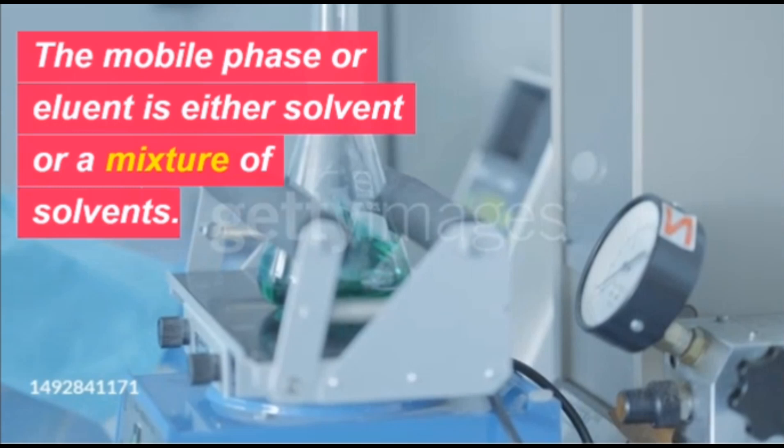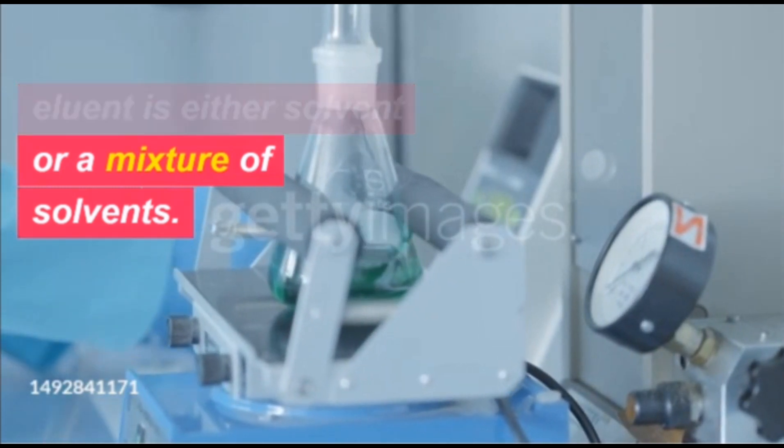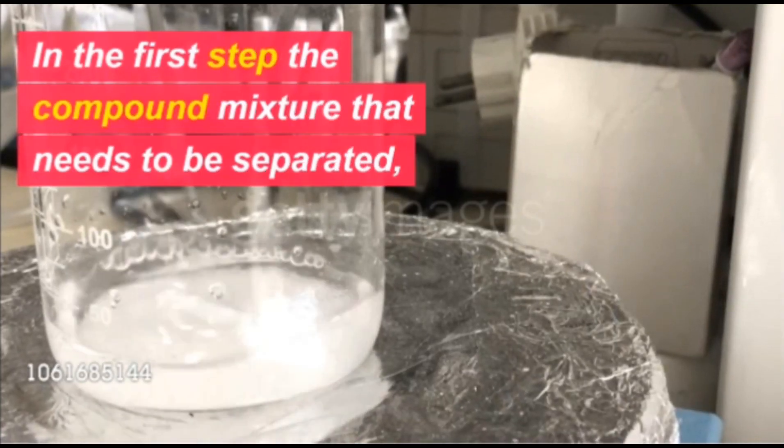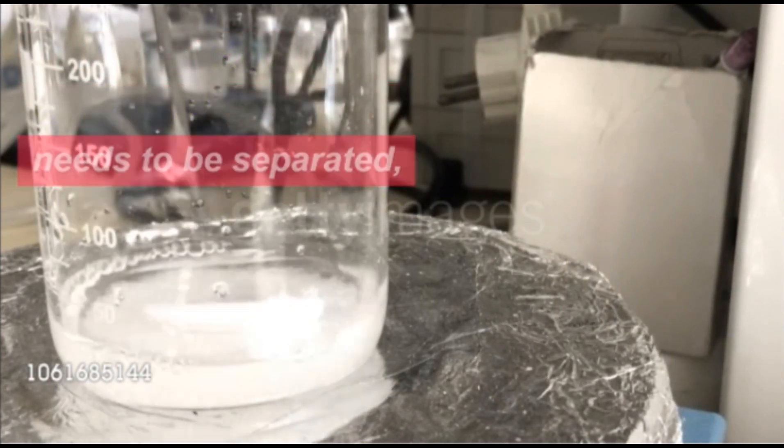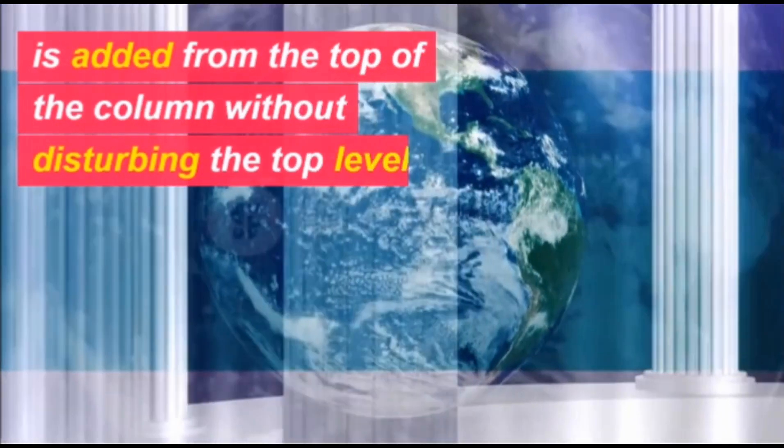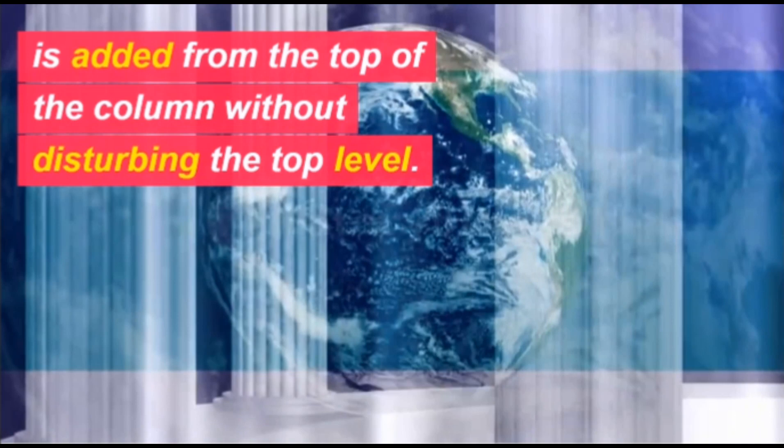The mobile phase or eluent is either solvent or a mixture of solvents. In the first step the compound mixture that needs to be separated is added from the top of the column without disturbing the top level.